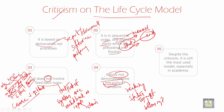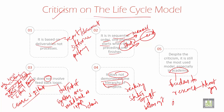The last point is that despite the criticism, it is still the most used model, especially in academia. Academia refers to the freedom to research — the freedom to develop your projects according to your interests. That is very important.